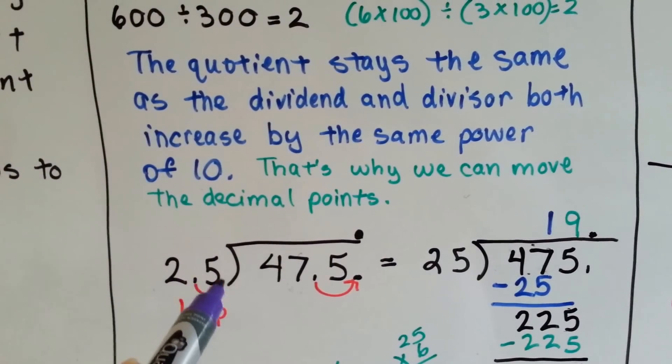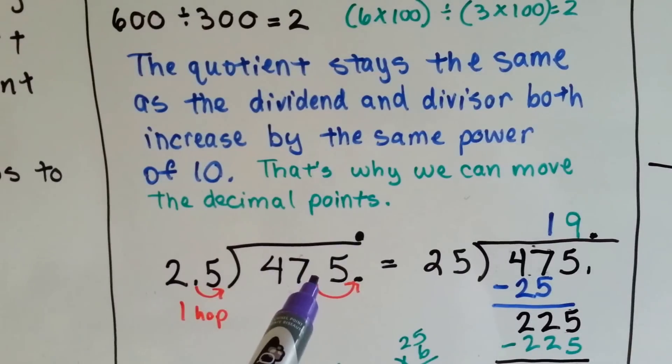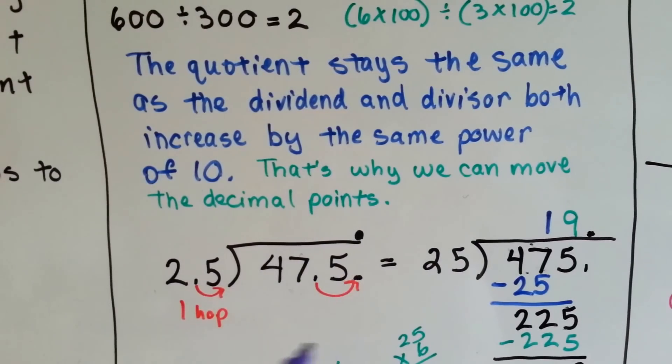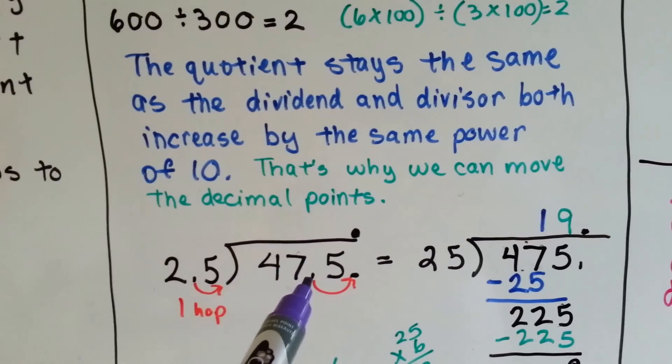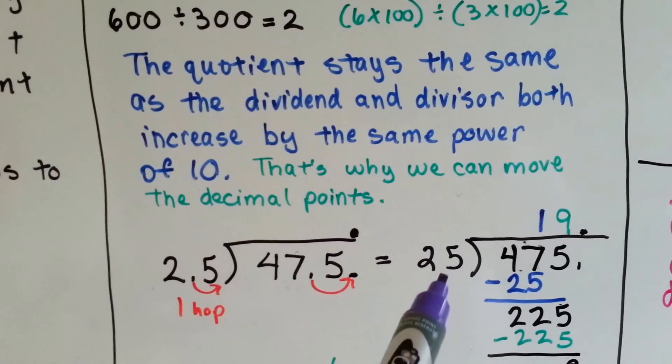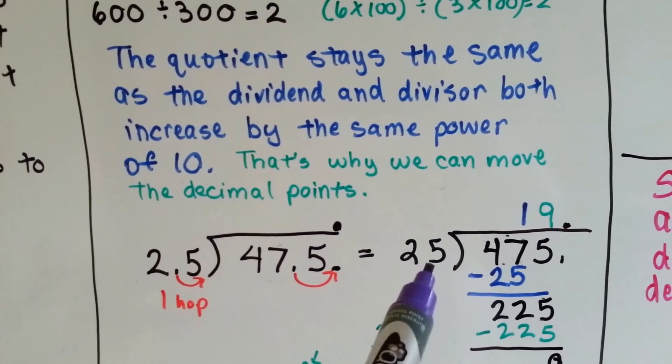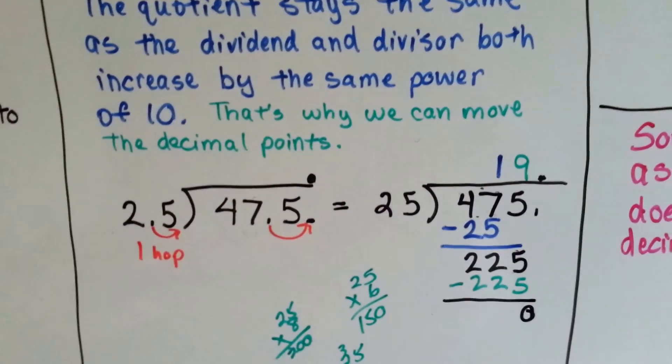If we multiply it by 10, this is going to move one spot. So we multiply this by 10 to move it one spot. 2.5 goes into 47.5, just as if it was 475 divided by 25. As if they were whole numbers.